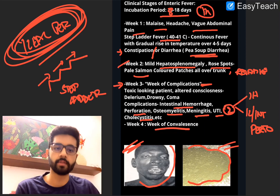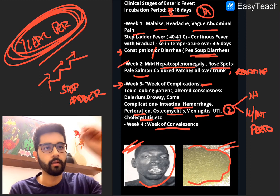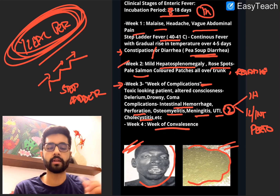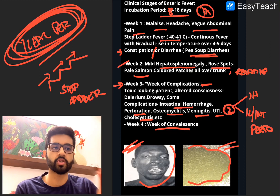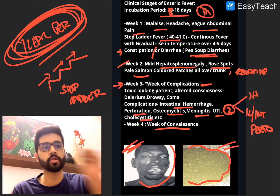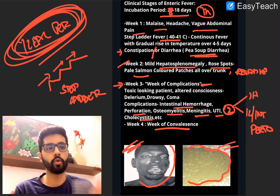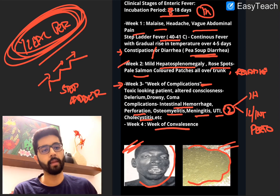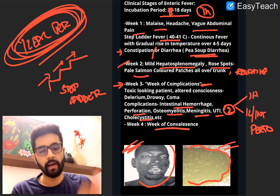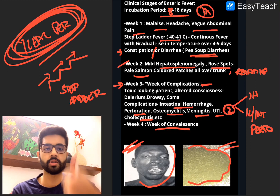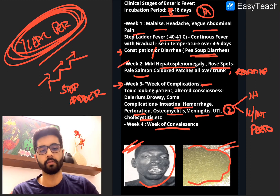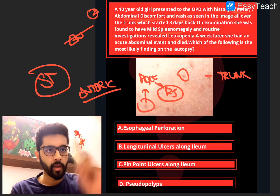Fourth week is the week of convalescence — the patient starts improving and getting better. To summarize: week 1 starts with prodromal symptoms, malaise, headache, vague abdominal pain; then step-ladder fever develops. Week 2: relative bradycardia, mild hepatosplenomegaly, and rose spots over the trunk. Week 3: very toxic-looking patient, sometimes altered consciousness, and the most important complications — intestinal hemorrhage and perforation. Week 4: patient starts getting better. Now let's apply this to the question. The patient presented to us during the second week and died the next week — so she died during the third week.